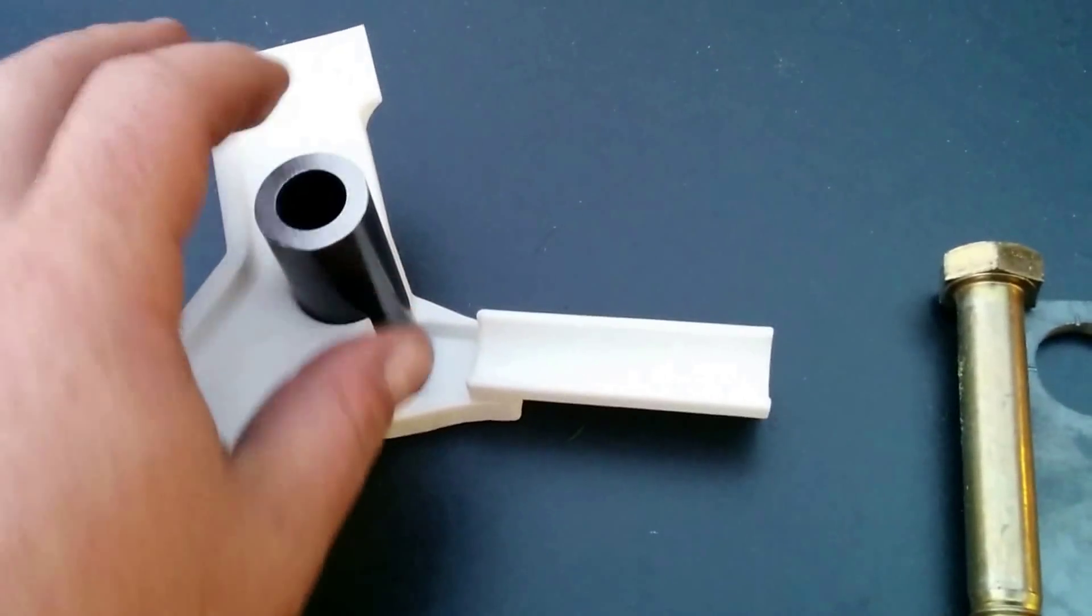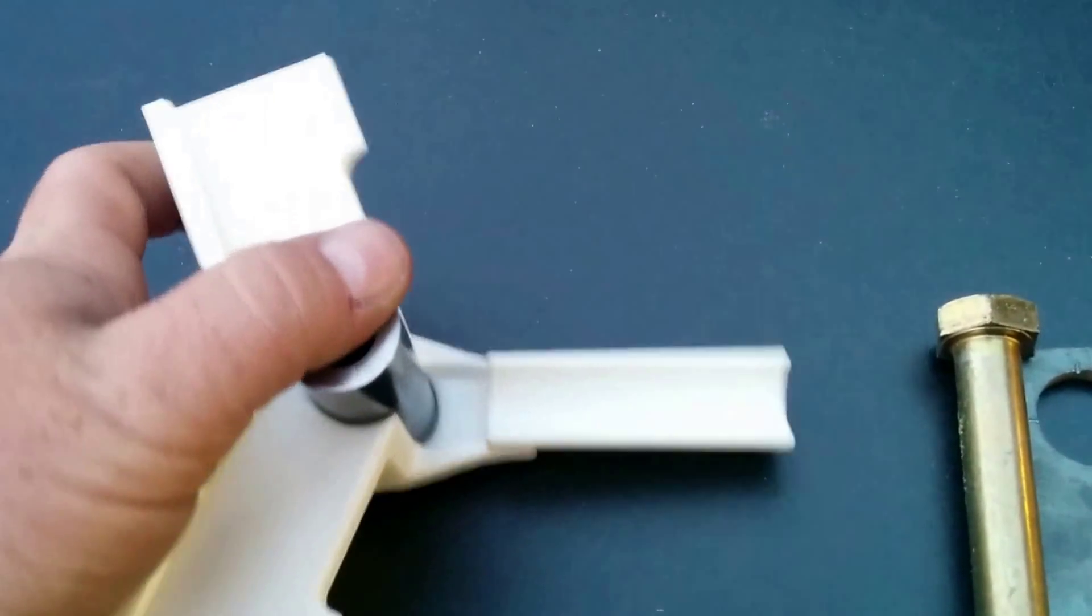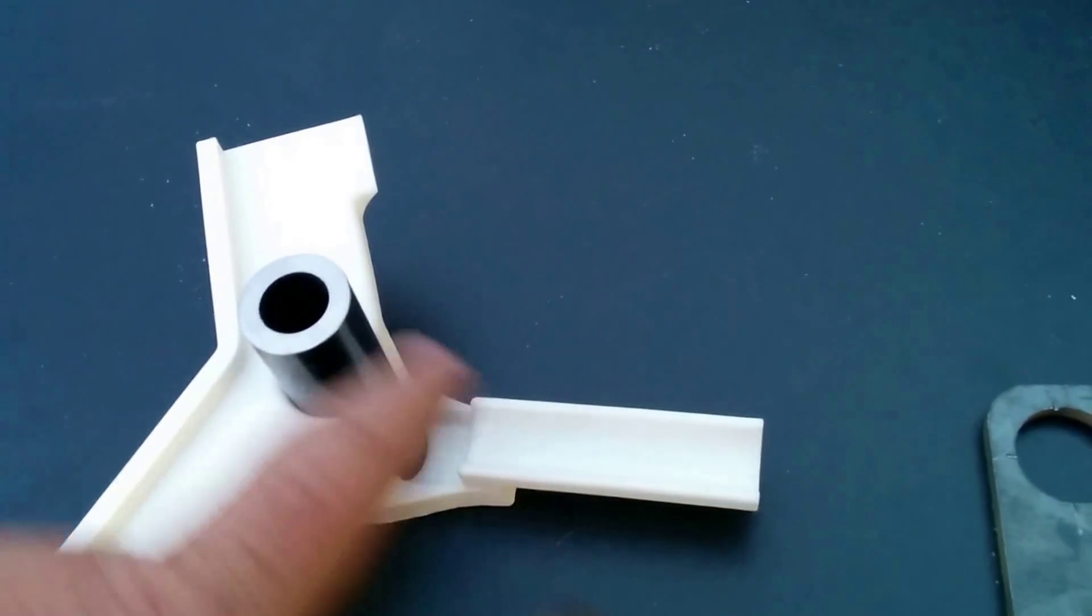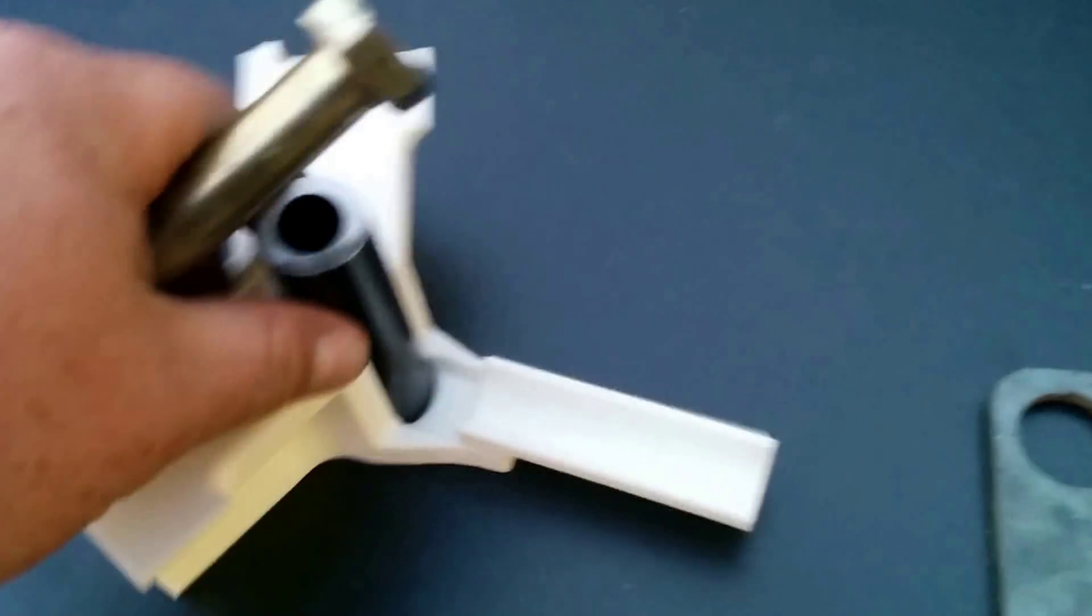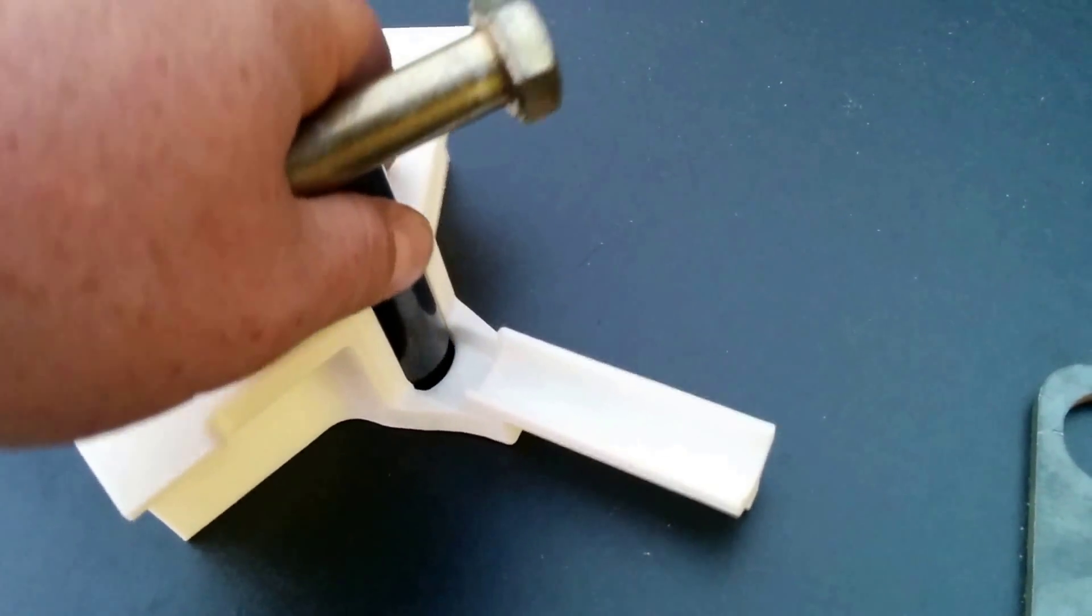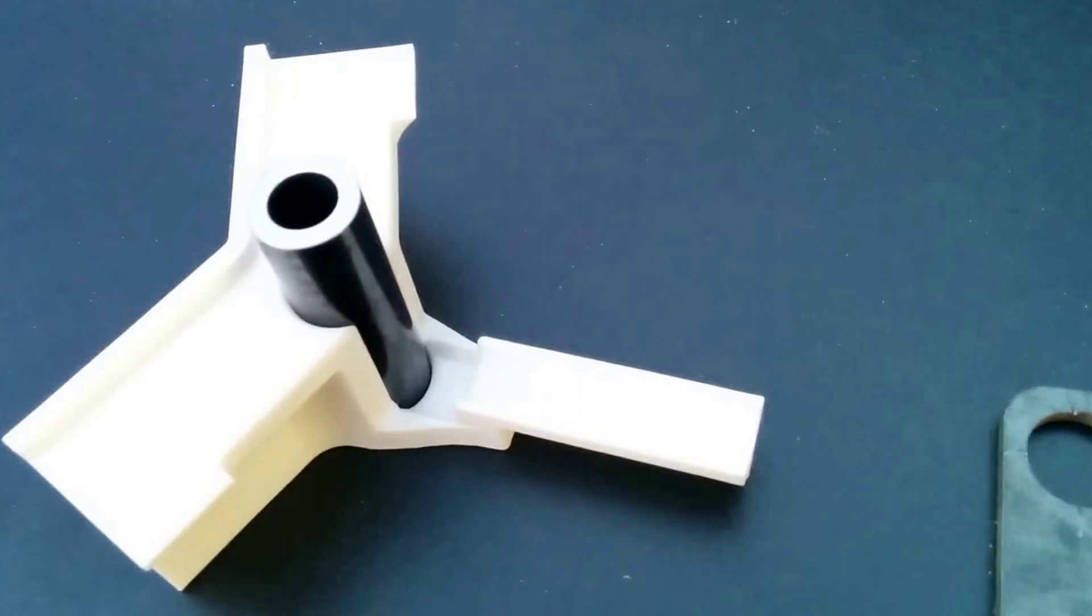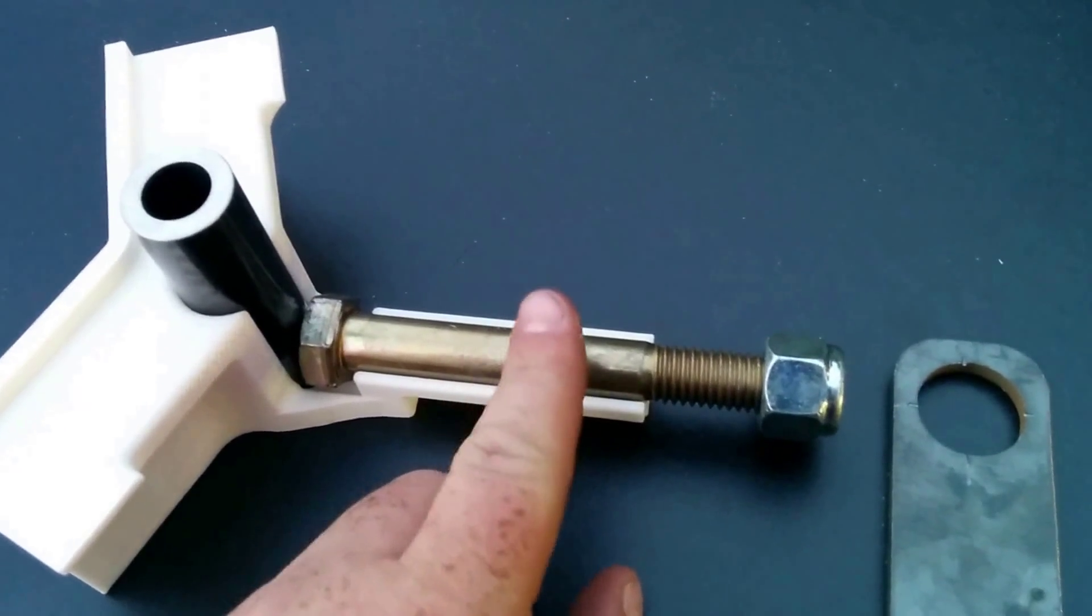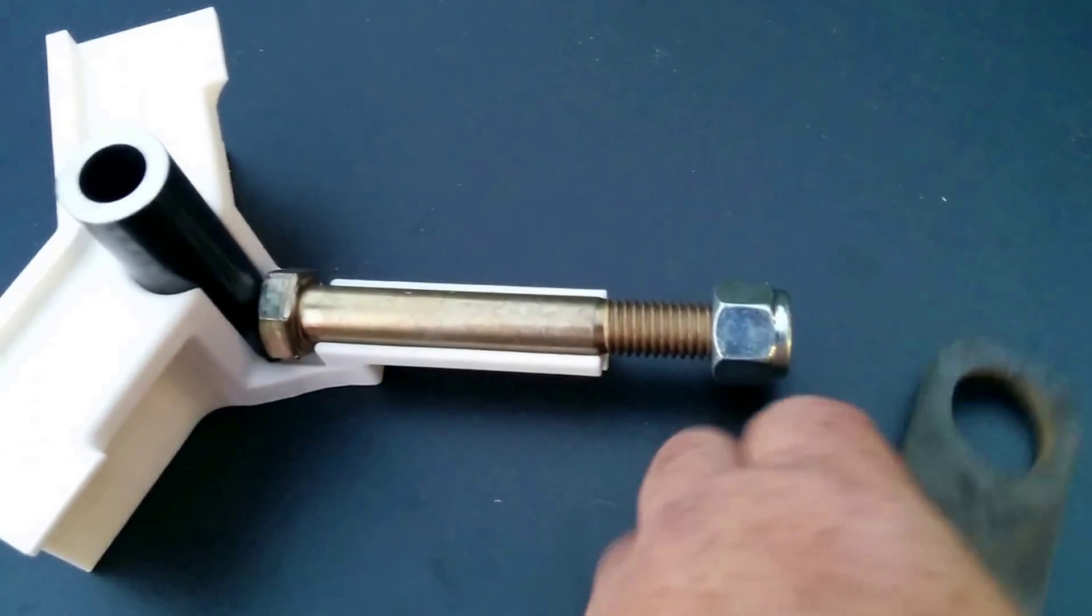So we have the tube that goes in the center. The kingpin will actually go through the center of this, and you can see it slides really nice into it. It's a really nice fit. The bolt will be where the bearing and the wheel will sit on, so we'll tack that into place.